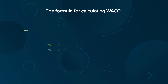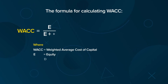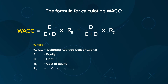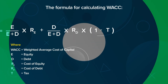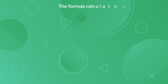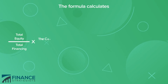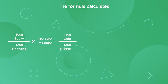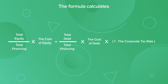The formula for calculating the weighted average cost of capital is: equity divided by (equity plus debt), times the cost of equity, plus debt divided by (equity plus debt), times the cost of debt, times (1 minus the corporate tax rate). The formula calculates the proportion of total equity to total financing multiplied by the cost of equity, plus the proportion of total debt to total financing multiplied by the cost of debt, which is multiplied by 1 minus the corporate tax rate.